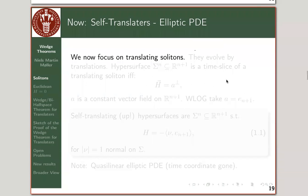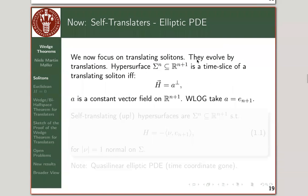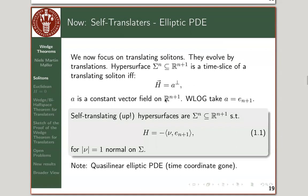We continue with the setup focusing on translating solitons. They evolve by translations that are constant in speed and fixed direction. If you have a hypersurface in R^(n+1), it's not hard to see that this is a time slice of one of these translating soliton movements if and only if the mean curvature vector equals some constant vector.